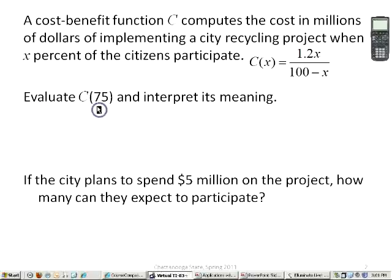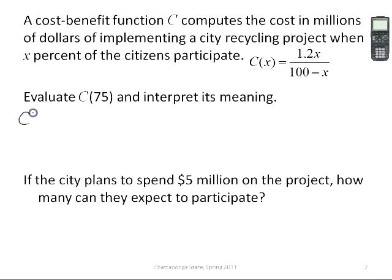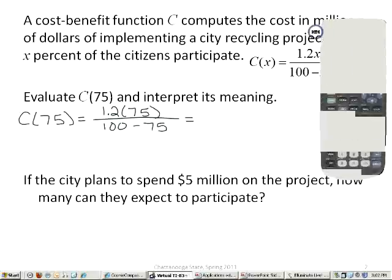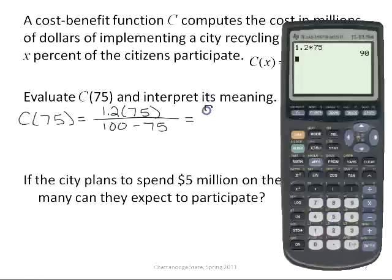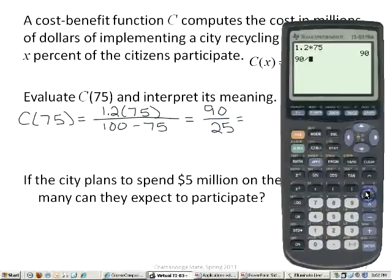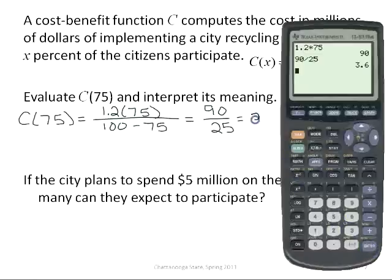So first we want to evaluate C of 75, which means we're simply going to use the 75 in place of the x. So C of 75 is 1.2 times 75 over 100 minus 75. Now let me take my calculator. That is a fairly easy thing to calculate here. I could do the 1.2 times 75, which gives me 90 in the numerator, divided by 25 is 3.6.